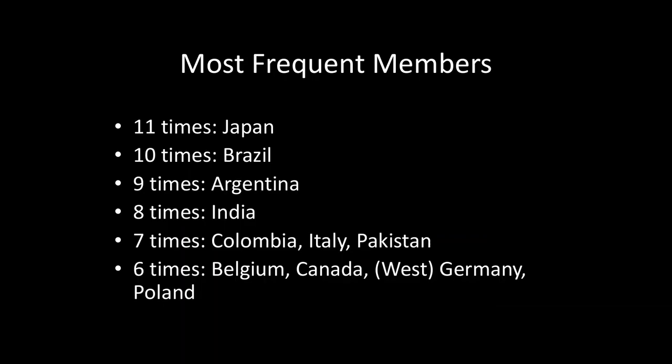If Belgium has been on there six times before, you may wonder where they rank among the most. Belgium is pretty high, but they are not the highest. Japan is the most frequent non-permanent member on the Security Council, having served 11 times. Brazil is next at 10, Argentina at 9, India at 8, Colombia, Italy, and Pakistan at 7, and then Belgium, Canada, West Germany and current Germany combined, and Poland all at 6.